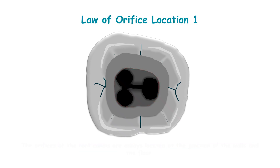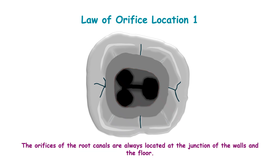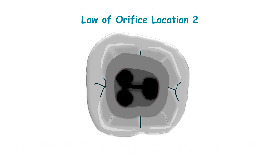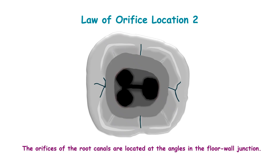The orifices of root canals are always located at the junction of the walls and the floor. The red line indicates the junction of walls and floor. The orifices of root canals are located at the angles in the floor-wall junction, where an angle is formed between the floor and the wall.